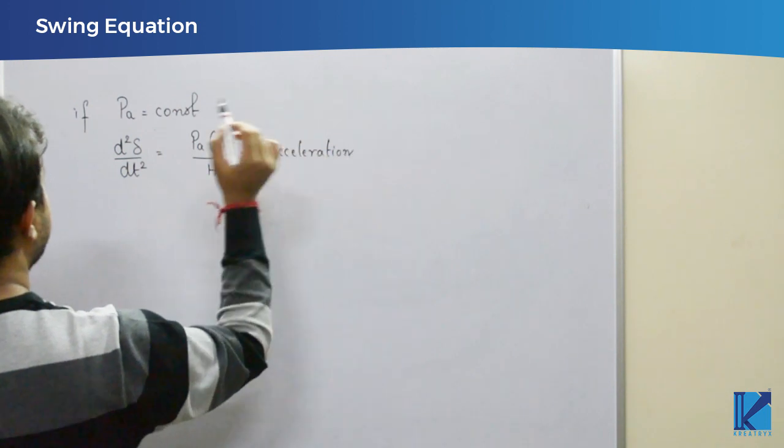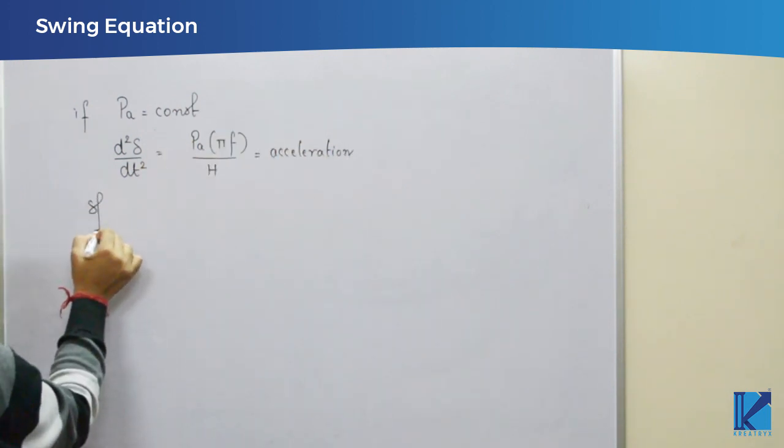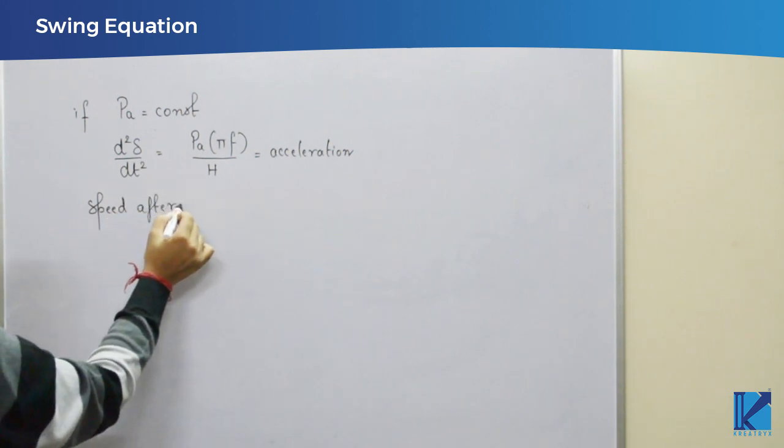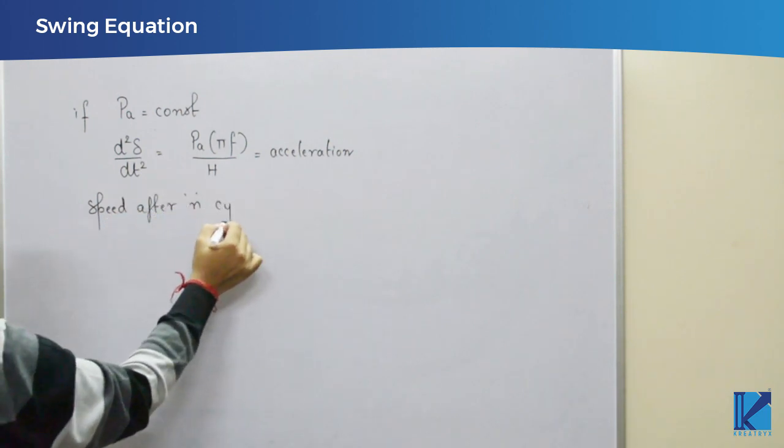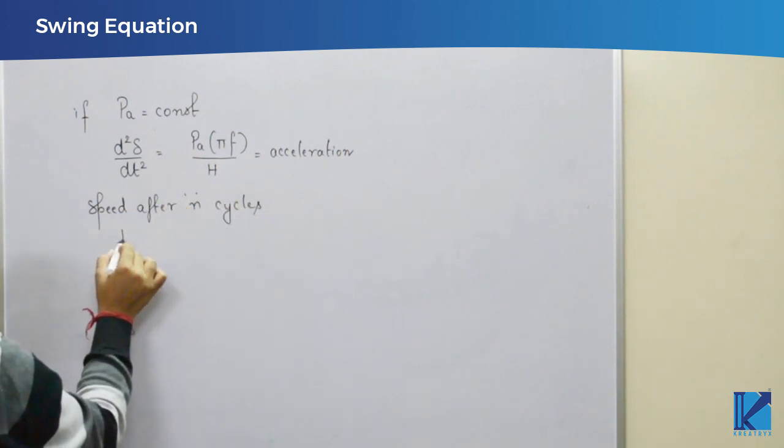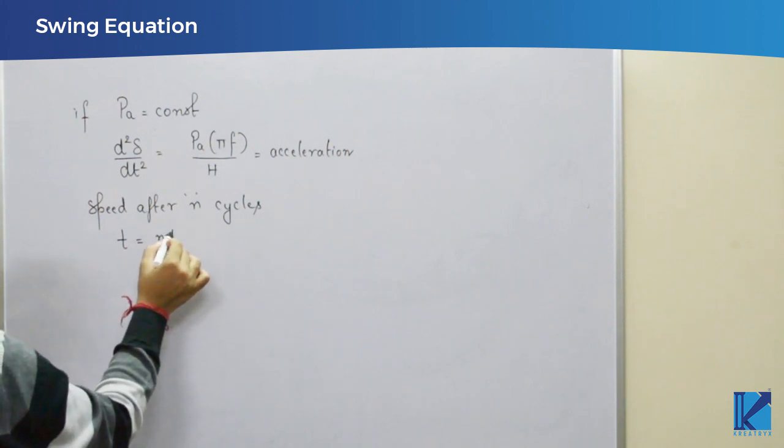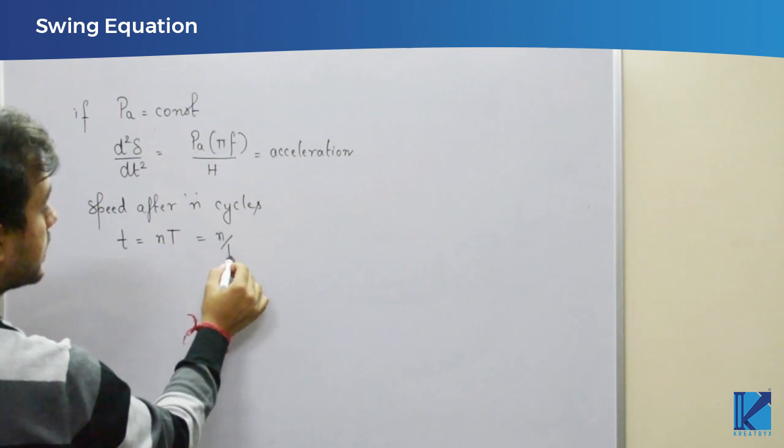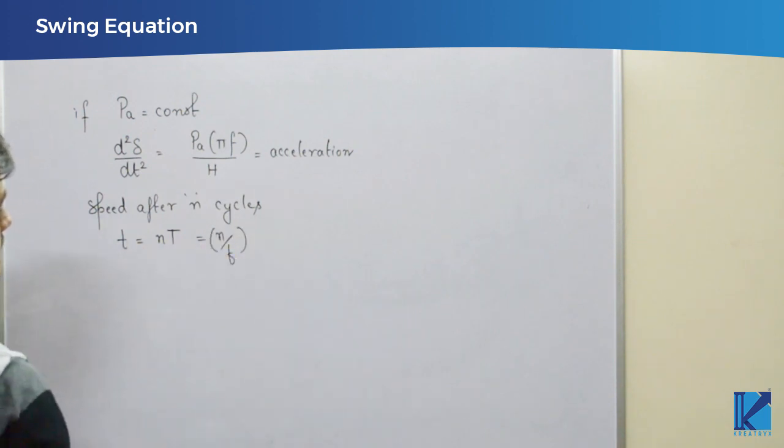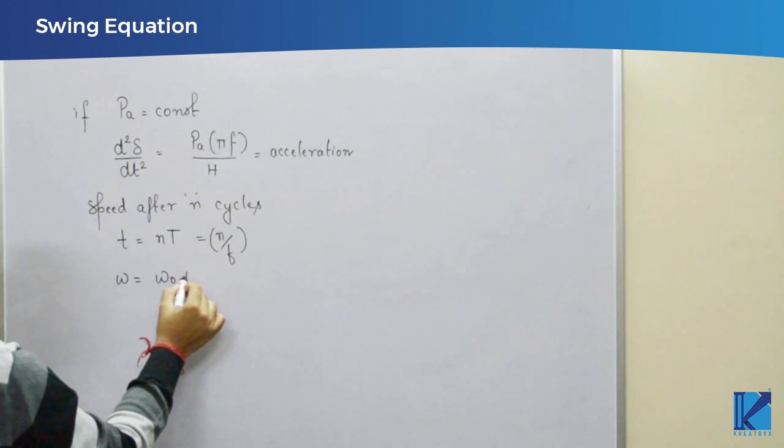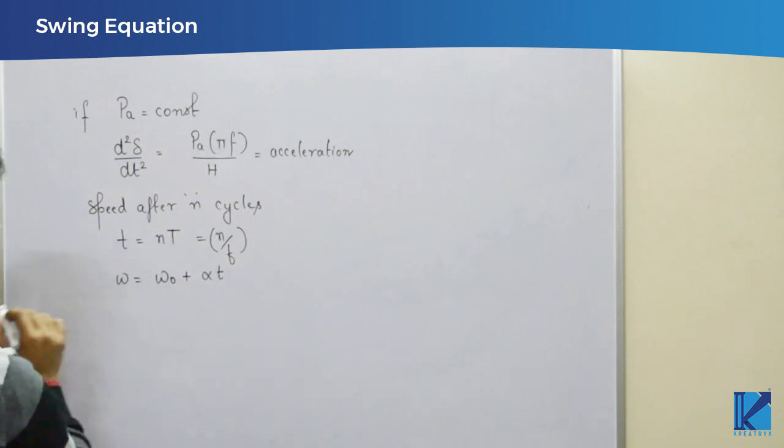Now, sometimes they may be asking you speed after n cycles. So, first of all, you have to find the time of n cycle, n into t, where t is the time period of one cycle, or you can say n by f. That is the time of n cycles. Now, if this is acceleration, we can use equation of motion omega equal to omega naught plus alpha t. From here, we can find out the new speed.